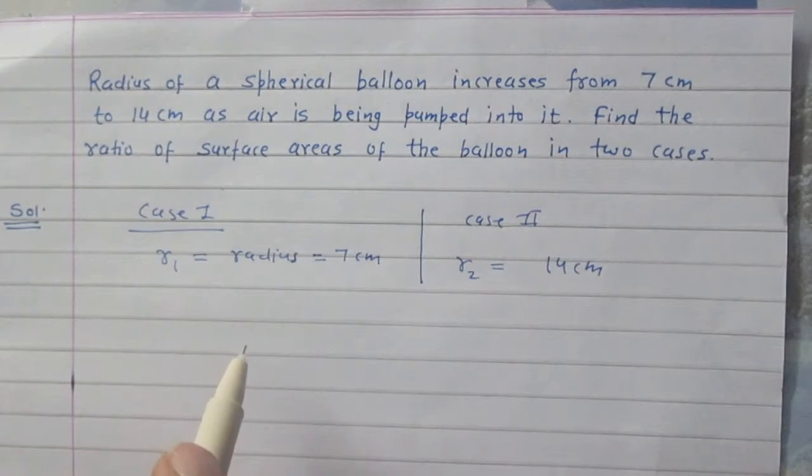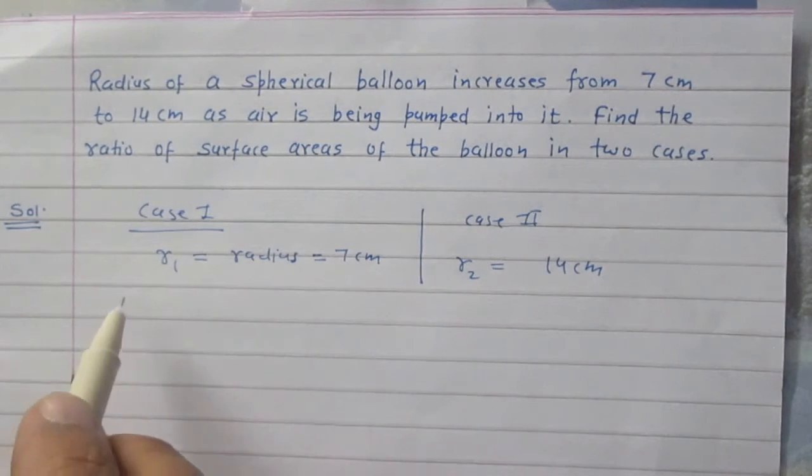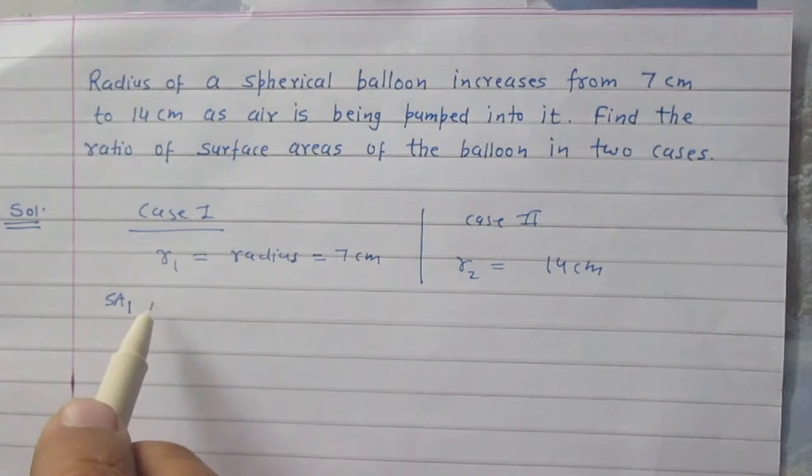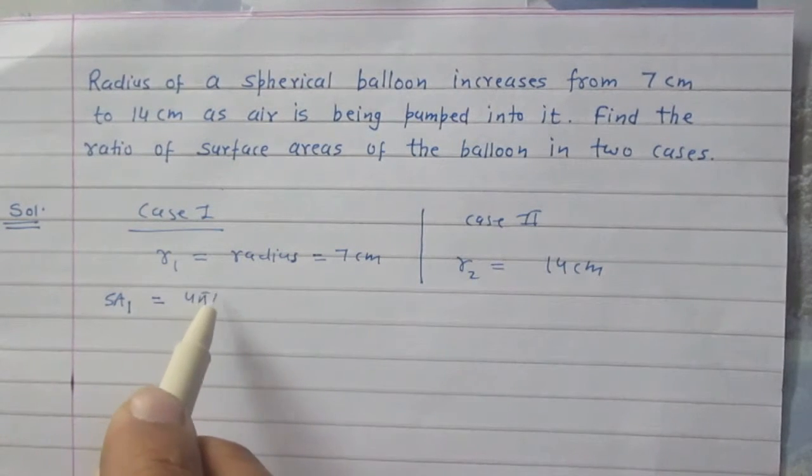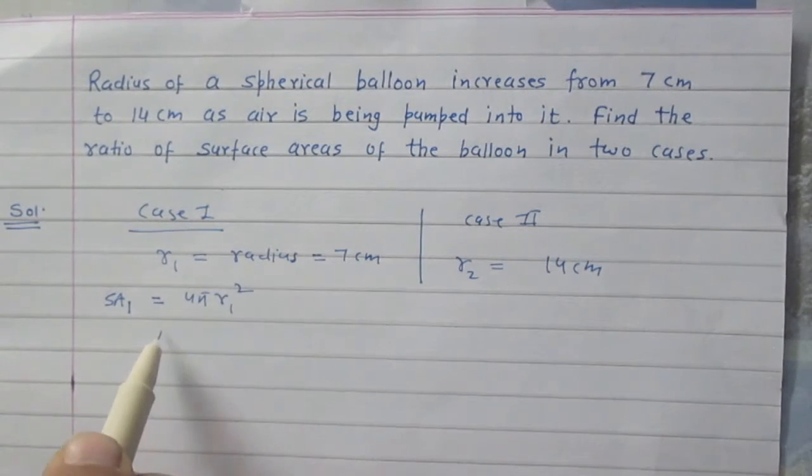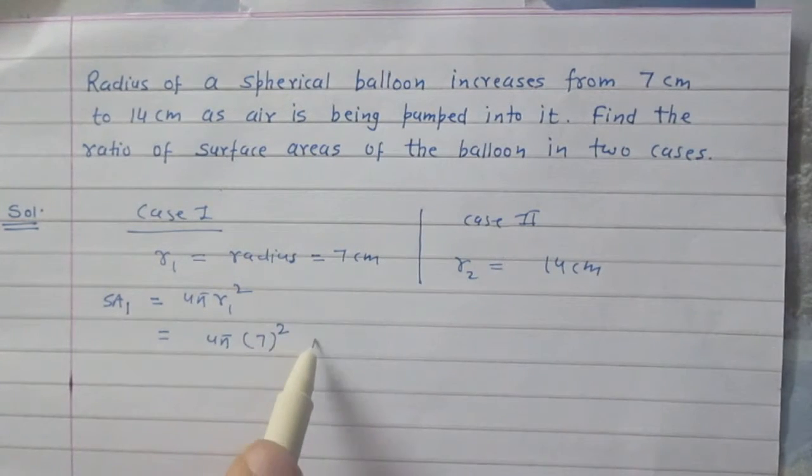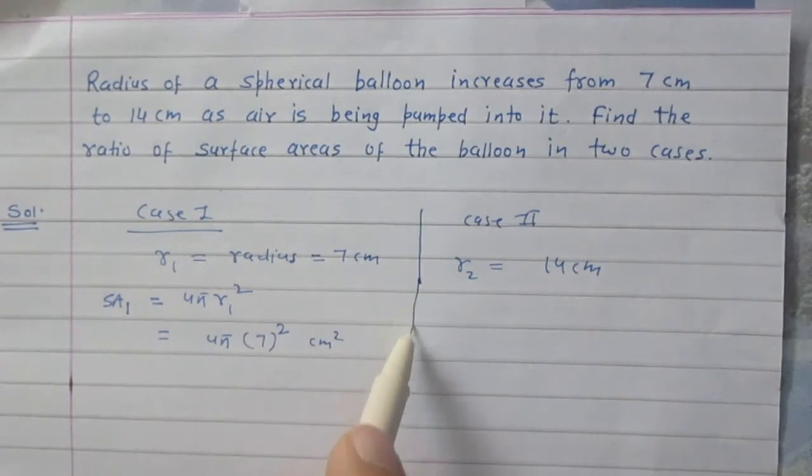We know that surface area of the sphere is 4πr² where r is the radius of the sphere. So according to the formula, surface area of the balloon in the previous case is 4πr₁², that is 4π(7)² cm².